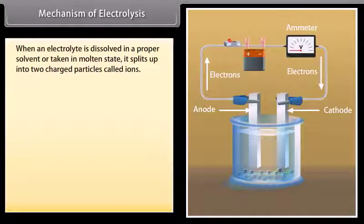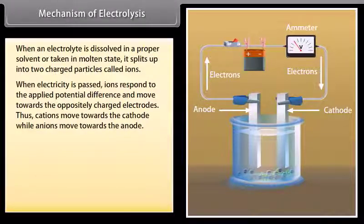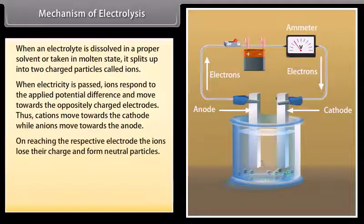Mechanism of electrolysis: When an electrolyte is dissolved in a proper solvent or taken in molten state, it splits up into two charged particles called ions. When electricity is passed, ions respond to the applied potential difference and move towards the oppositely charged electrodes. Thus, cations move towards the cathode while anions move towards the anode.